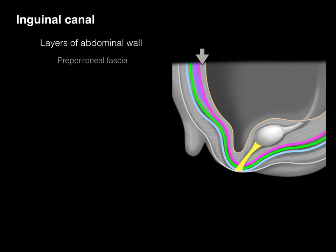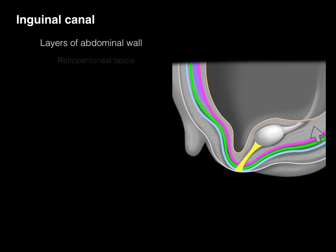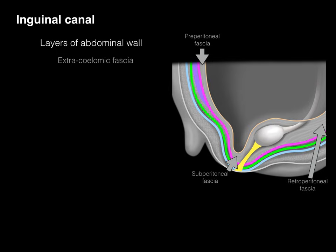The next layer is the preperitoneal fascia — 'pre' meaning in front of. Going down below, we call it subperitoneal fascia — 'sub' meaning below. And behind, it's called retroperitoneal fascia. Collectively, this is the extracoelomic fascia, sometimes known as extraserosal fascia — all synonyms.